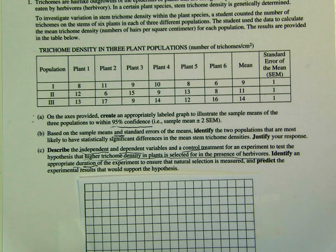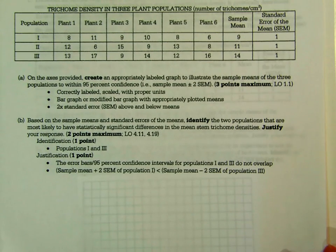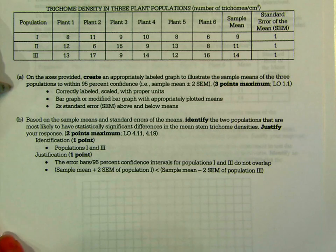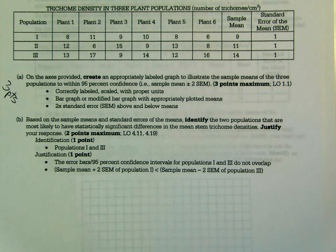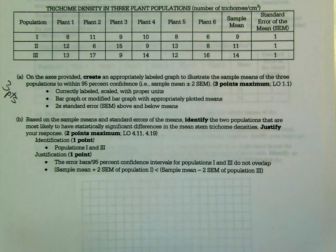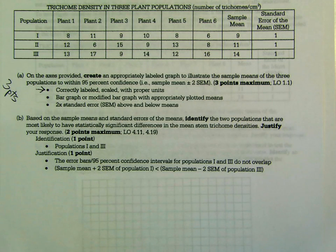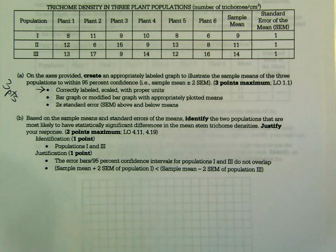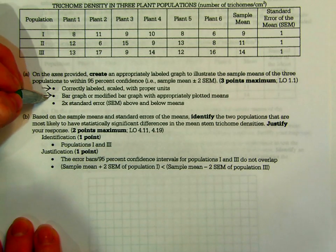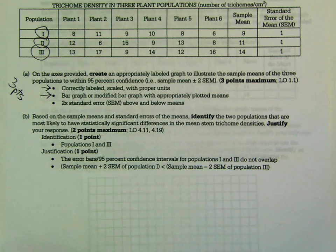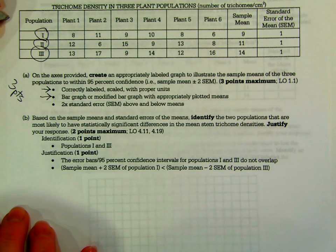Now I'm going to show you the scoring guideline for this question. Part A was worth up to three points out of ten. One point was for correctly labeling, scaling, and putting units on your graph — population one, two, or three on the x-axis and mean trichome density on the y-axis. You got another point for realizing you needed to use a bar graph, not a line graph, because these are three separate populations — therefore it is discontinuous data.